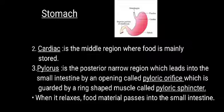The last region of the stomach is the pylorus, a posterior narrow region that leads into the small intestine through an opening called the pyloric orifice. This pyloric orifice is guarded by a ring-shaped muscle called the pyloric sphincter, which regulates the movement of food from the stomach to the small intestine. When the pyloric sphincter relaxes, food passes from the stomach into the small intestine.